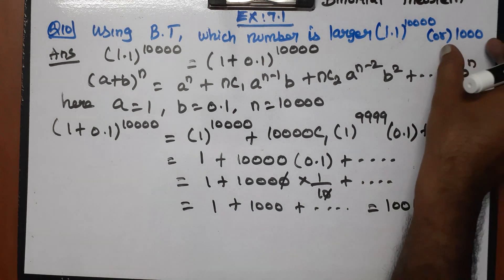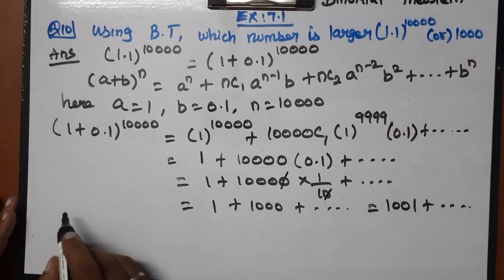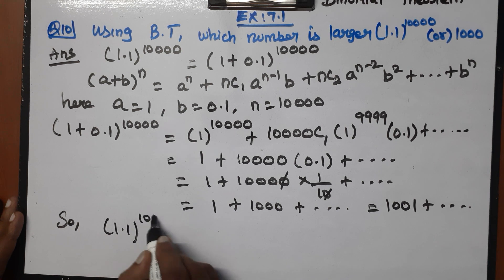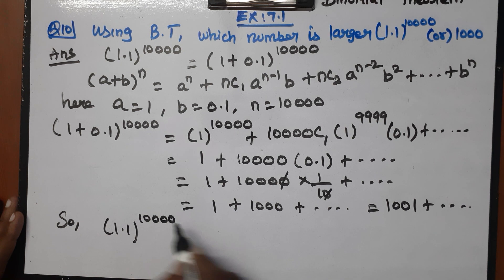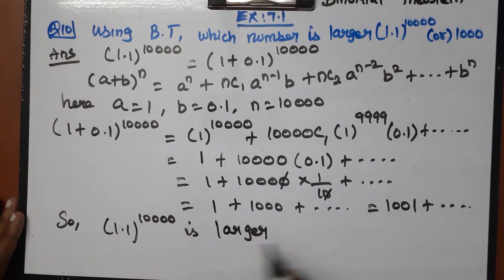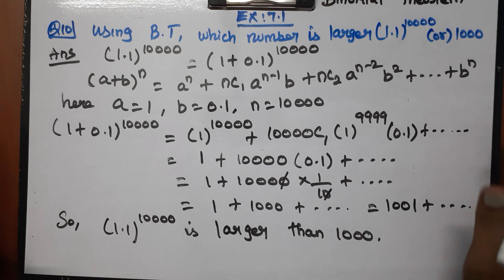So the value of 1.1 power 10,000 is greater than 1,001, which is greater than 1,000. Therefore, 1.1 power 10,000 is larger than 1,000. That is the answer.